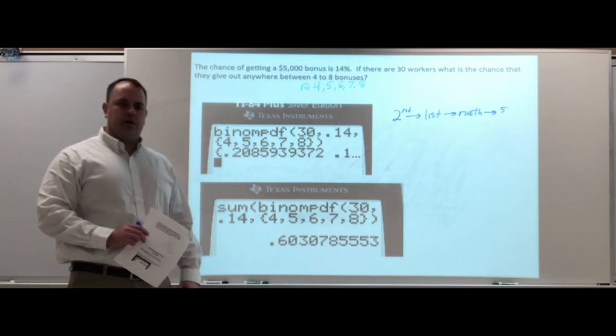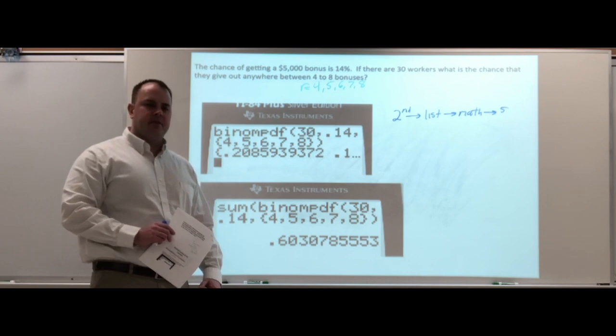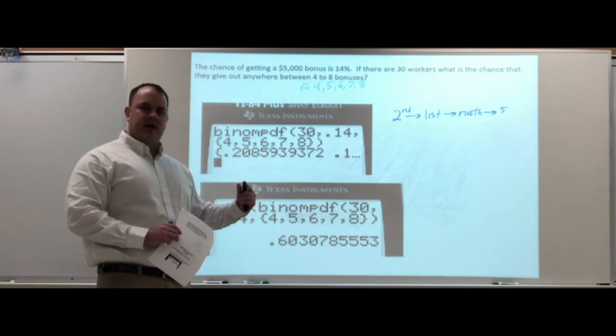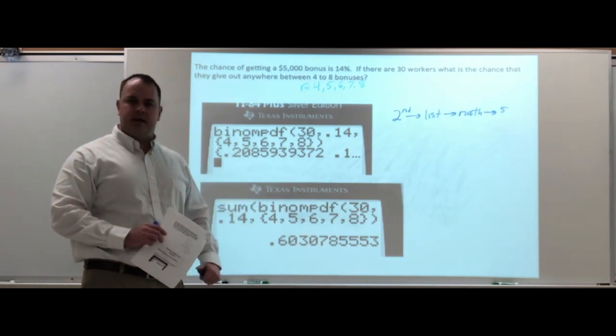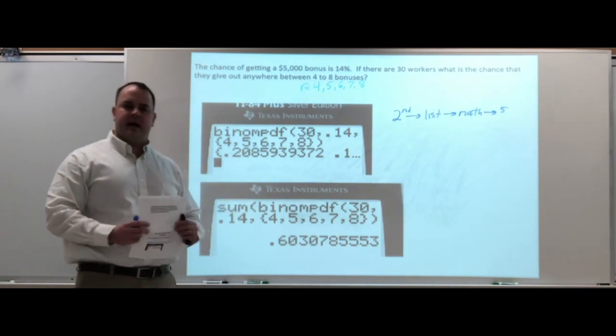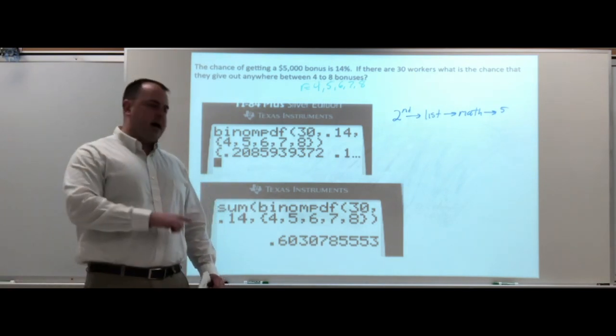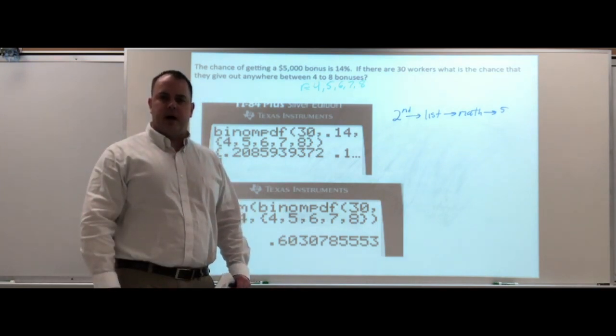That's just another shortcut that you could use if you're using the calculator function to do these. If you have the newer version, where it says the x values, you're just still putting in the brackets and paste all of them in there, so that should work out the same exact way. So there's one more example using the formula, and now you know how to use the calculator function. That's the end of 12.3, the binomial distribution.